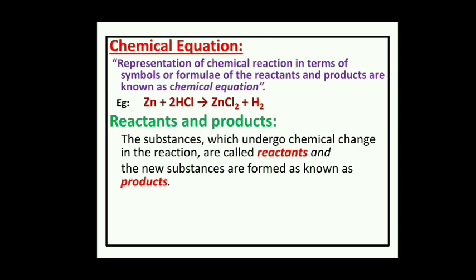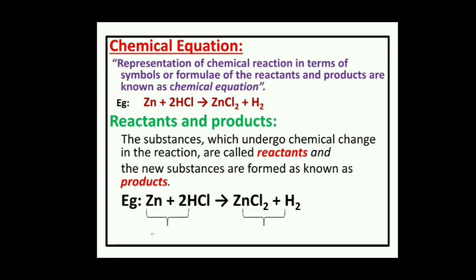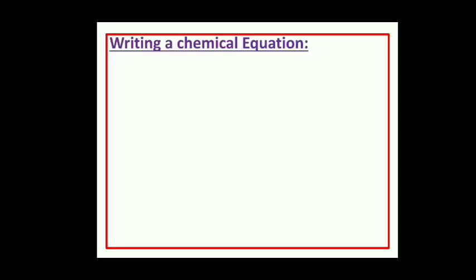Reactants are the substances which undergo chemical change, and products are the new substances which are formed during a chemical reaction. For example, zinc reacts with HCl to form zinc chloride and hydrogen gas. Here, zinc and HCl are reactants because they undergo chemical change, and ZnCl2 and H2 are products because they are formed during the chemical reaction.